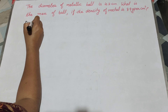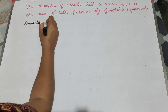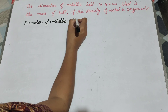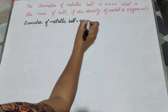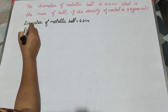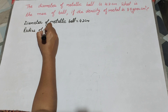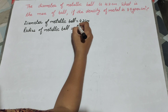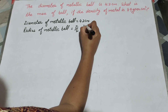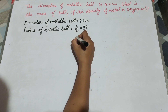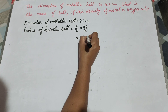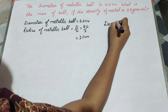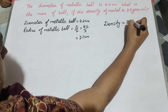Given is the diameter of the metallic ball — it is equal to 4.2 centimeters. Now we find the radius of the metallic ball. Radius equals 4.2 divided by 2, which is equal to 2.1 centimeters. Given is the density of the ball: density is 8.9 grams per centimeter cube.